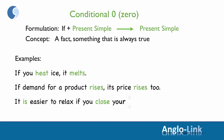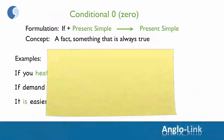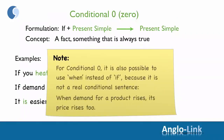'It is easier to relax if you close your eyes.' Note that for conditional zero, it is also possible to use 'when' instead of 'if', because it is not a real conditional sentence. For example, you can say: 'When demand for a product rises, its price rises too.'